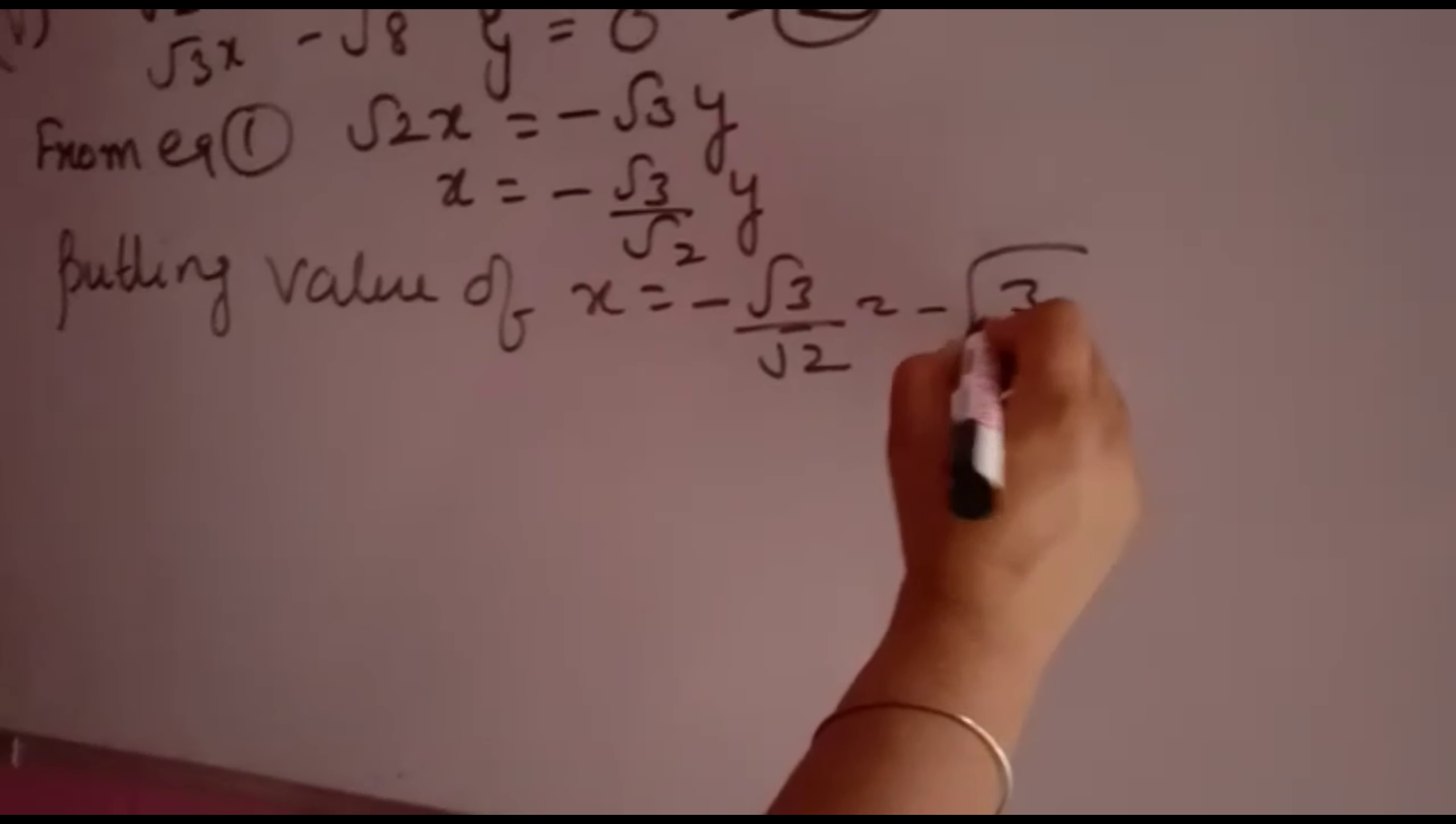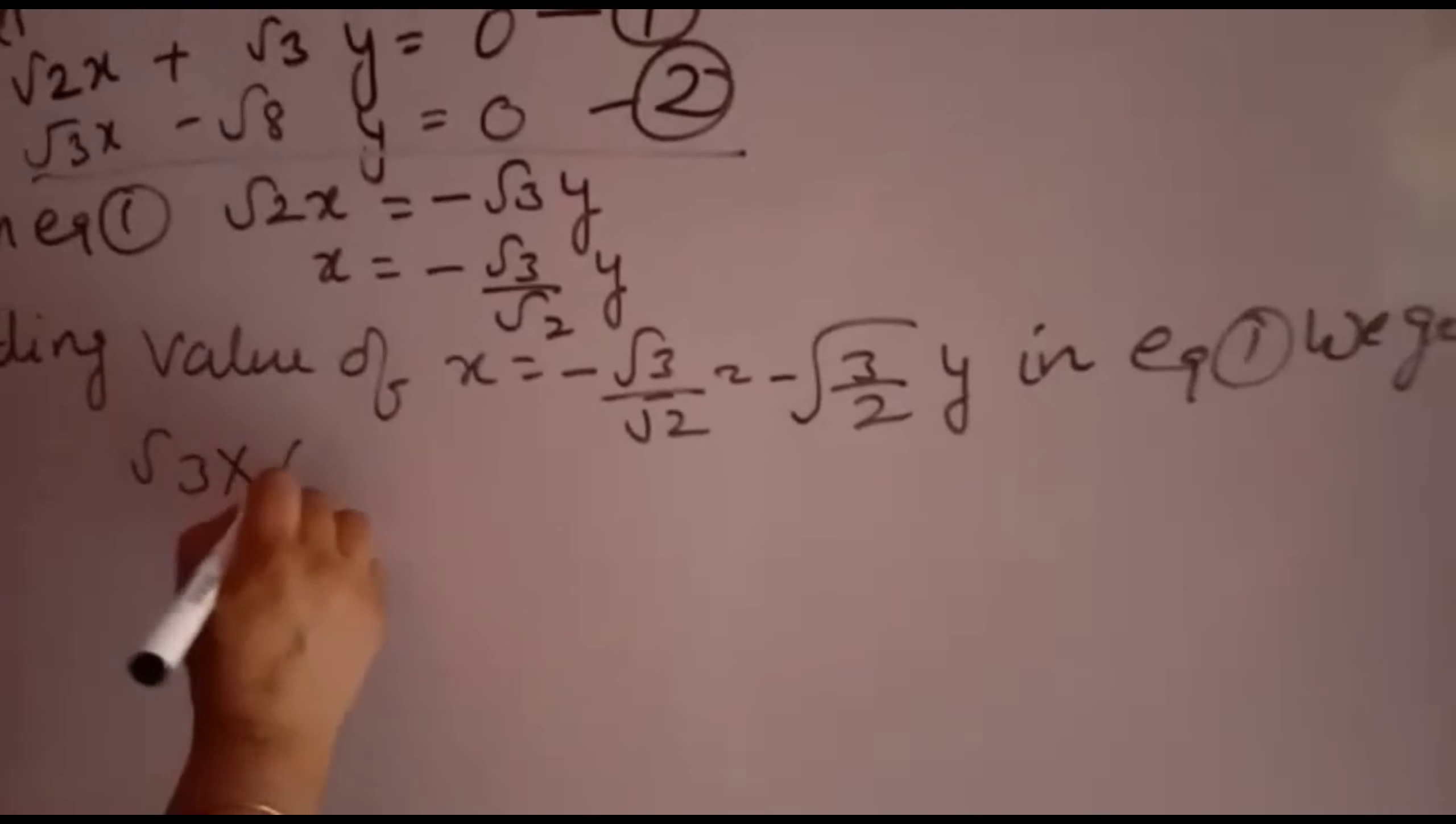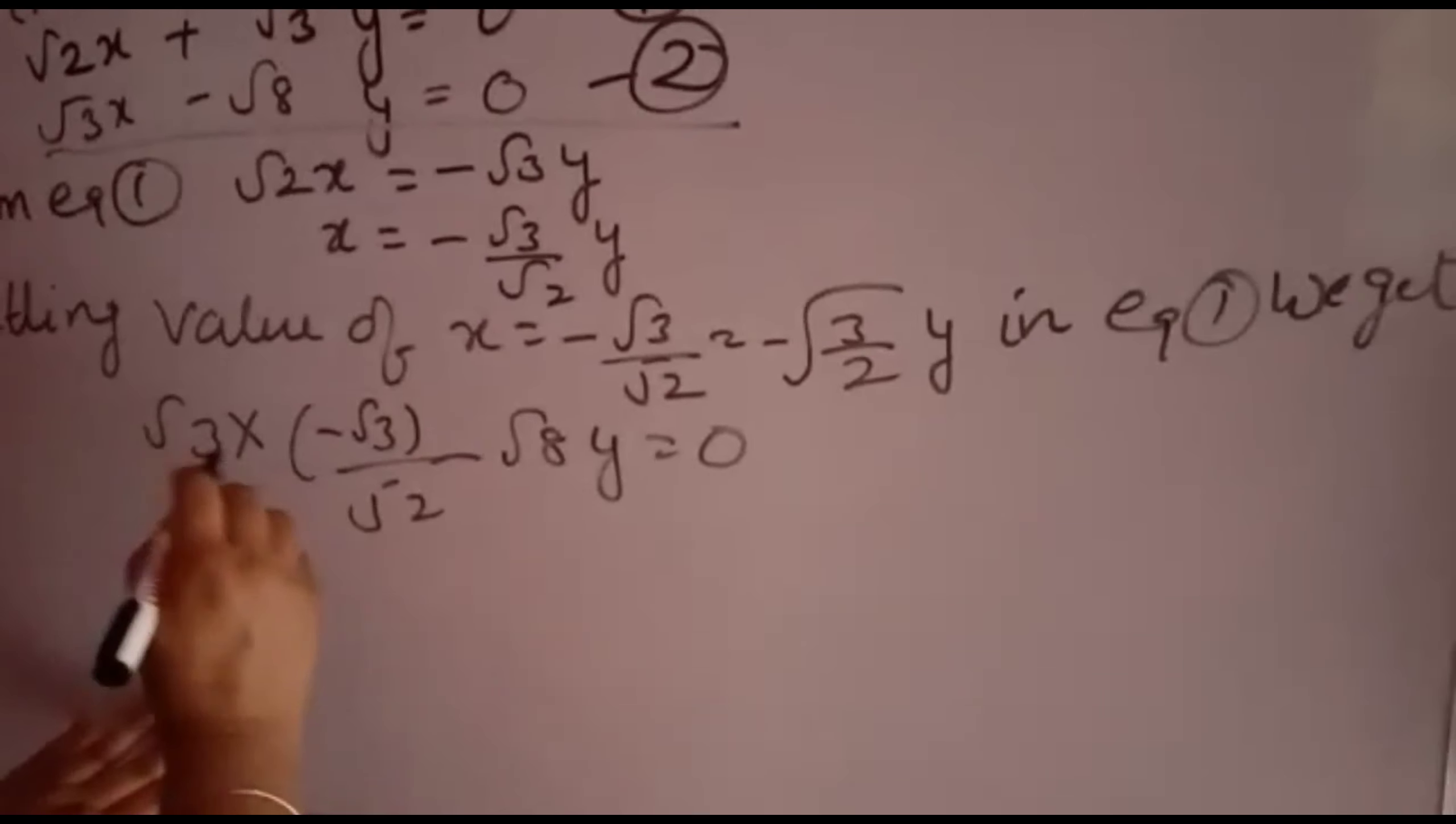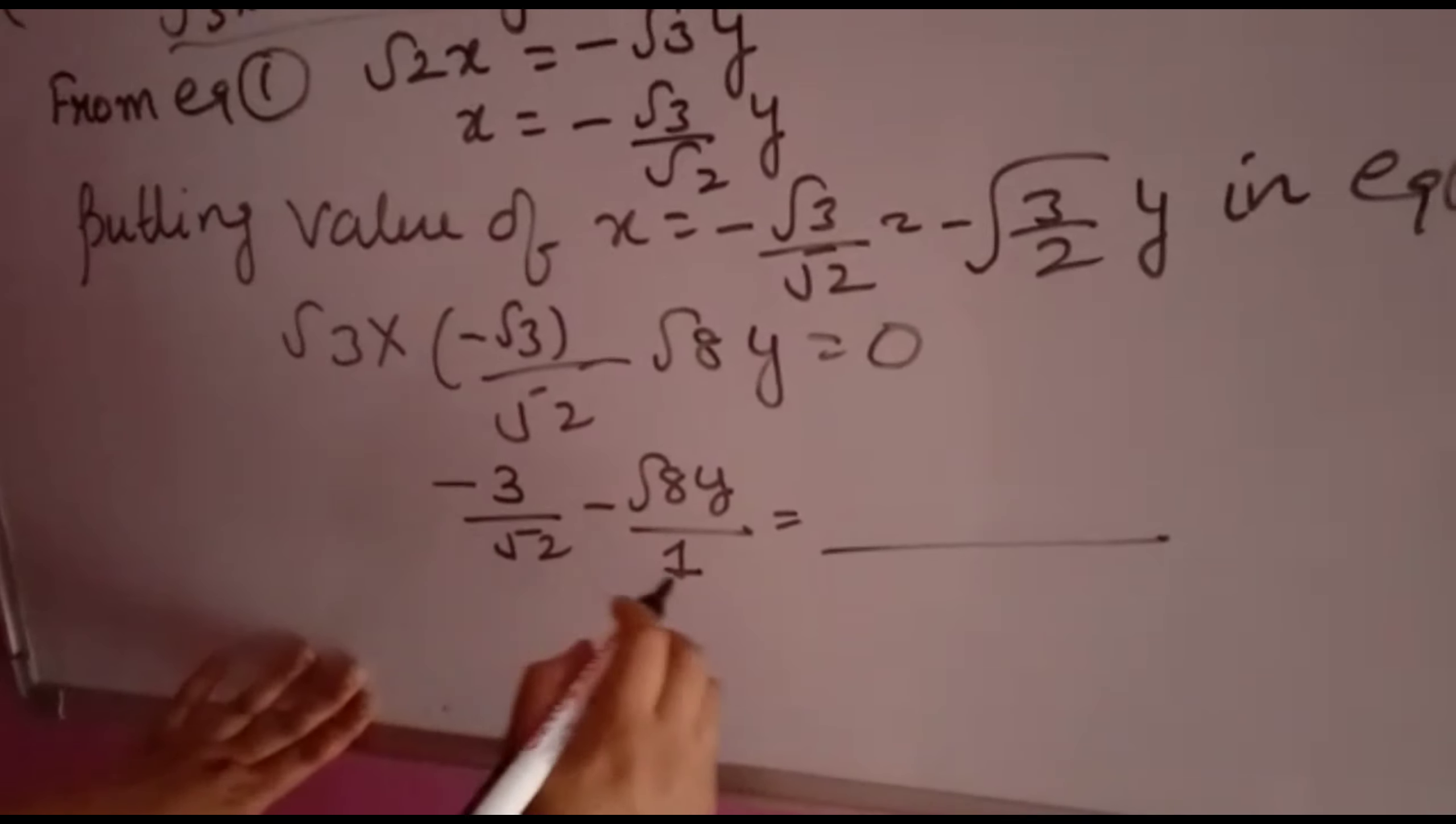Now substitute this value of x in equation 2. We get √3(-√3/√2·y) - √8y = 0. √3 times √3 is 3, so this becomes -3/√2·y - √8y = 0.